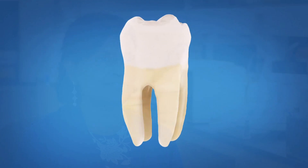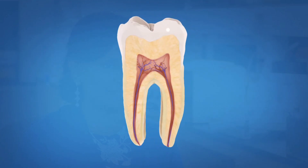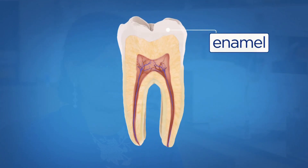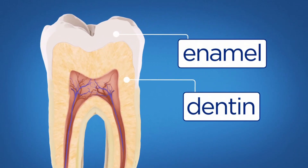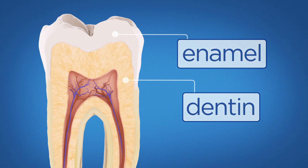Matrix mineralization is a big thing in our human body because we have bones, we have enamel, we have dentin. Dentin is a calcified tissue. It is not as hard as enamel, but it's very similar to bone in structure.